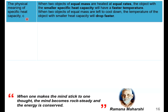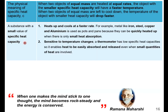The physical meaning of specific heat capacity: when two objects of equal mass are heated at equal rates, the object with smaller specific heat capacity will have a faster temperature rise. When left to cool, the object with smaller heat capacity will also drop temperature faster. A substance with small specific heat capacity heats up and cools at a faster rate. Examples like iron, steel, copper, and aluminum are normally used for pots and pans because they can be quickly heated up with small heat absorption.